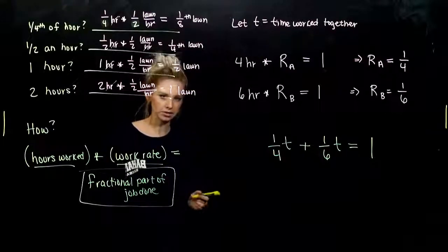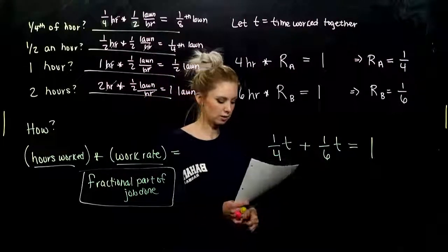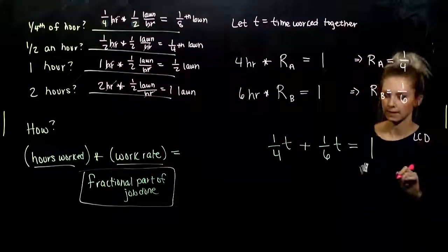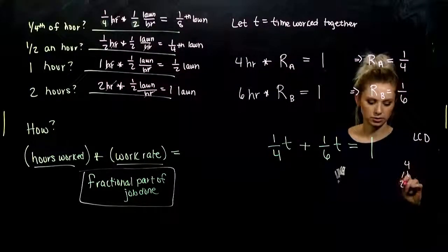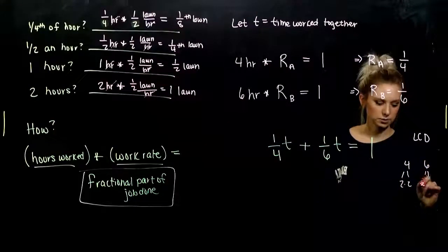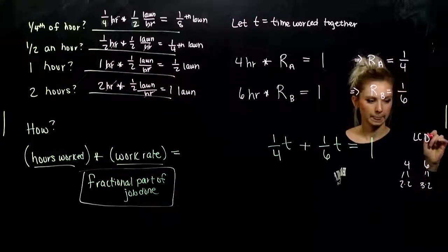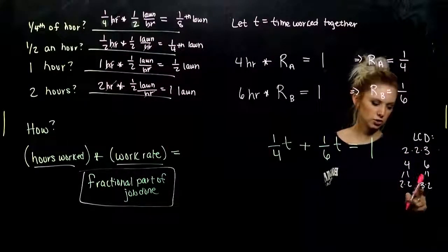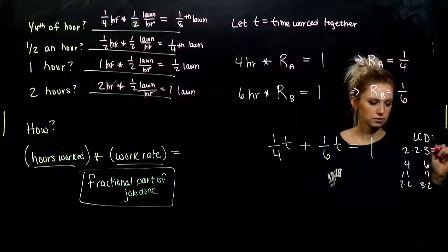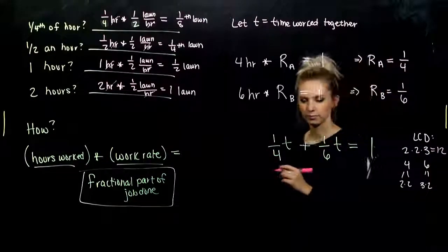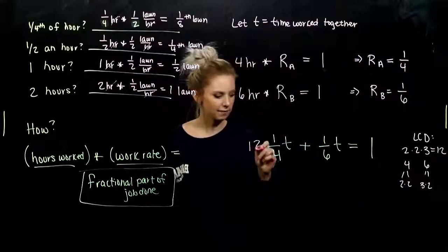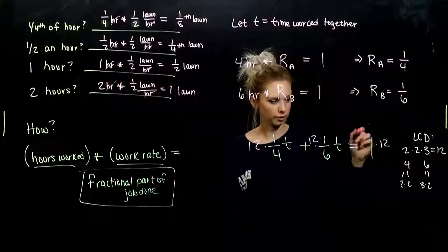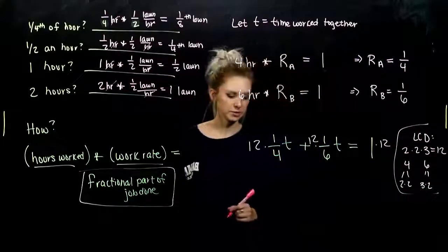What do we do in this case? I have fractions, and I want to get rid of them. What is our LCD? I've got four, which breaks into two and two. Six, which breaks into two and three. So my LCD needs to take into account two factors of two, one factor of three, which is twelve. We'll multiply every single term by twelve. Don't forget about the one on the right. And we'll see what comes out.